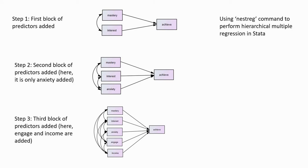Hierarchical regression is carried out in those cases where you wish to test the relationship between a set of independent variables and a dependent variable, but you wish to do so in a series of steps where you are adding predictors across those steps. What that does is it produces a hierarchically nested set of models.